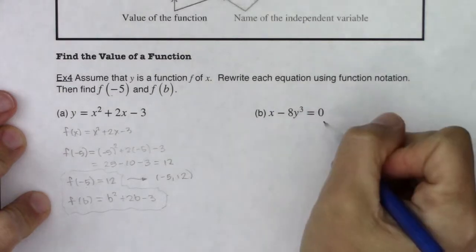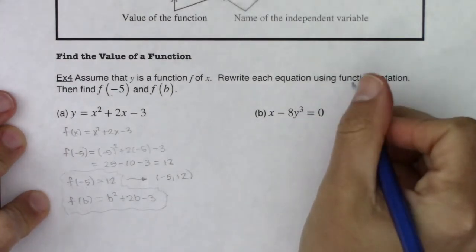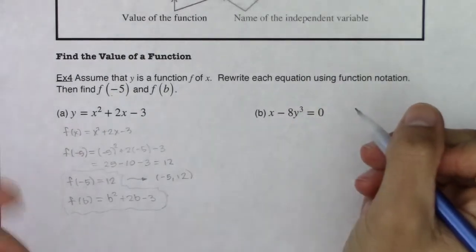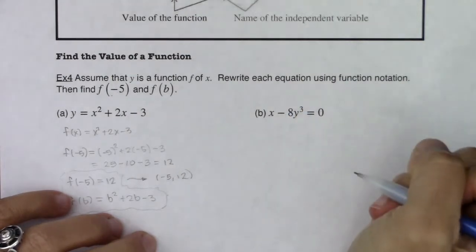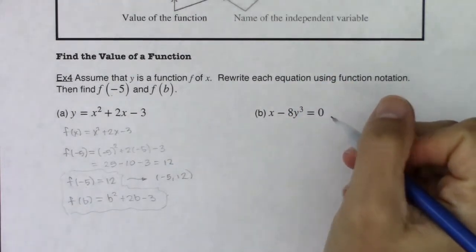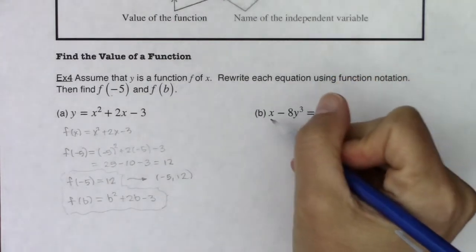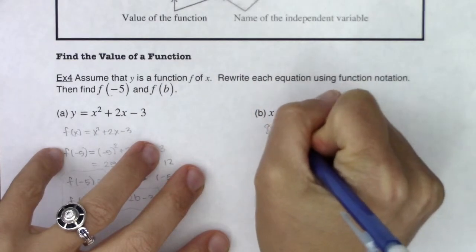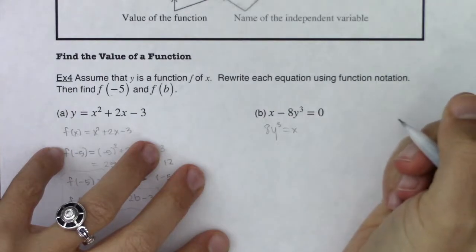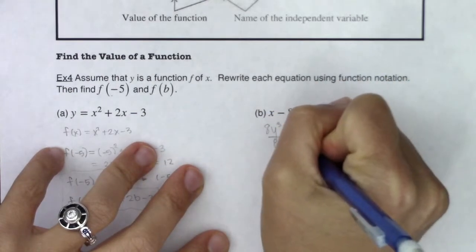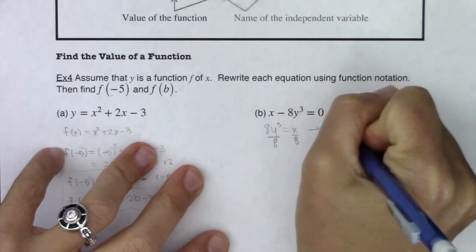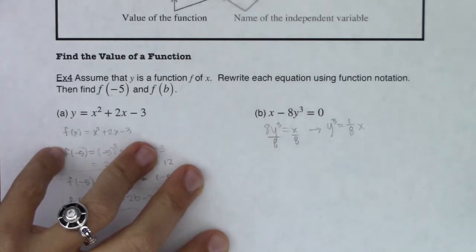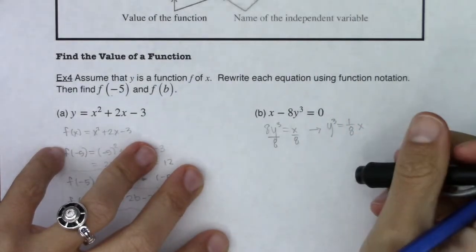Let's try that over here. The first thing I want to do if I want to rewrite each equation using function notation is I need to solve for y. I haven't gotten y isolated yet, so let's isolate y. I can add 8y cubed to the other side. I'll do it that way because I like to have positive lead coefficients. You could subtract the x if you wanted to, but 8y cubed has to equal x. I want to solve for y, so I'm going to divide both sides by 8. So now I'm looking at y cubed equaling 1 eighth x, 1 eighth x.